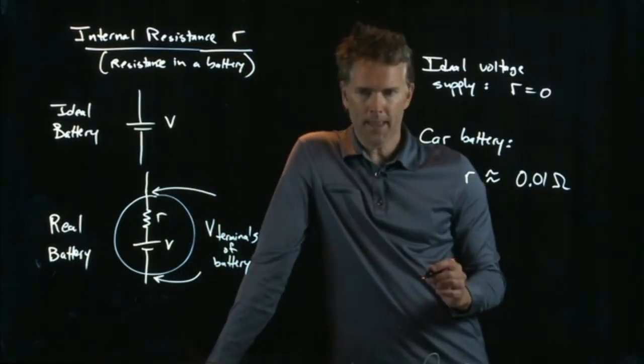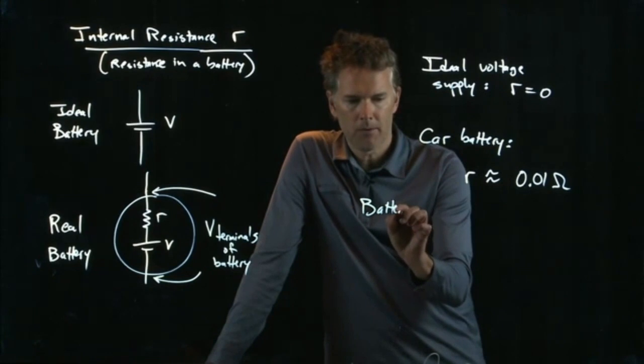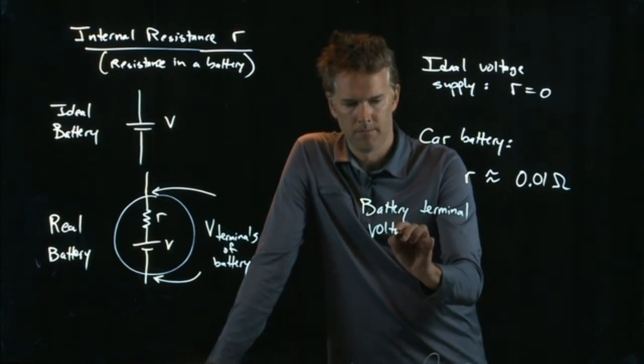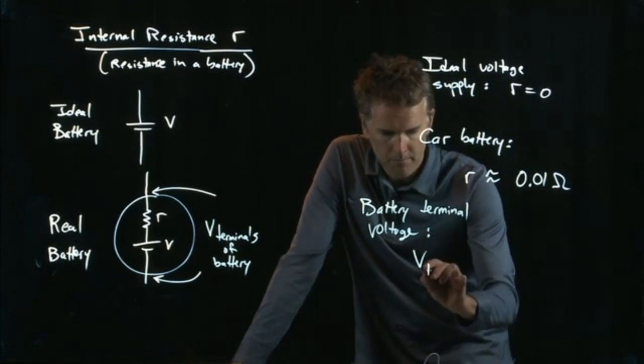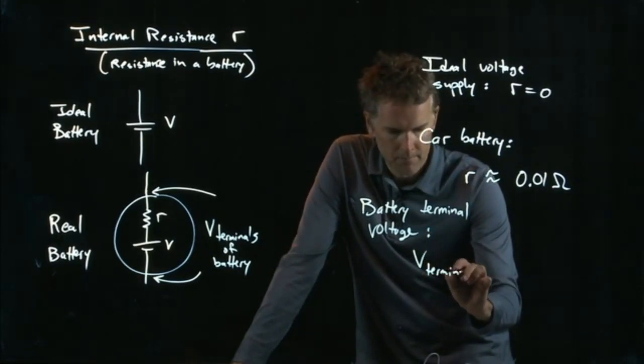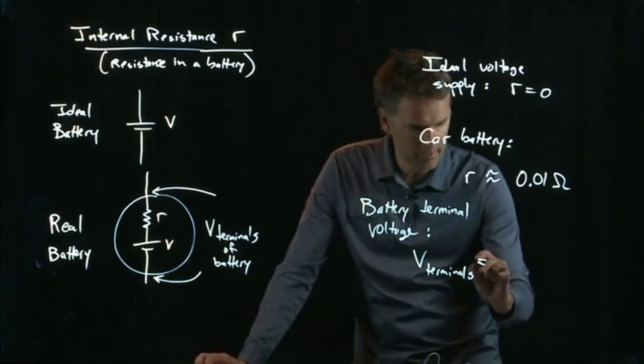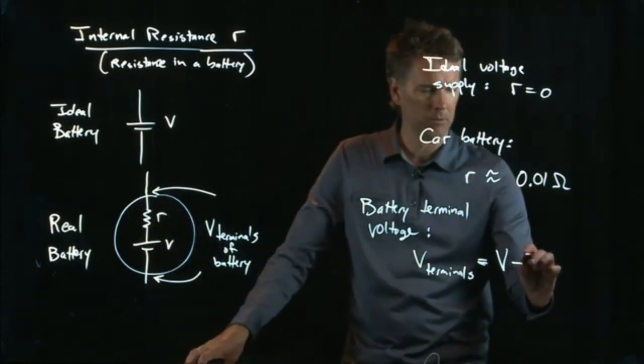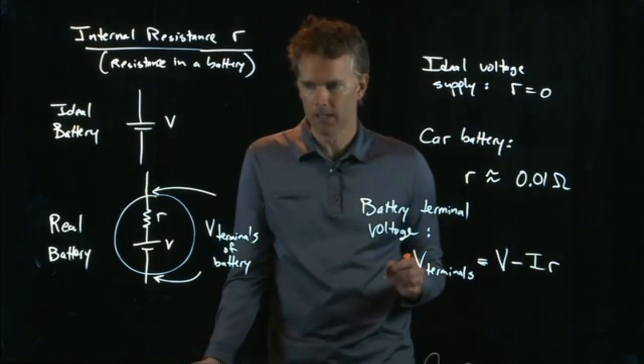So we know what that is because we know what Ohm's Law says. The battery terminal voltage is going to be the following: it's this ideal V minus the voltage drop across the resistor. And Ohm's Law tells us that it is I times r.